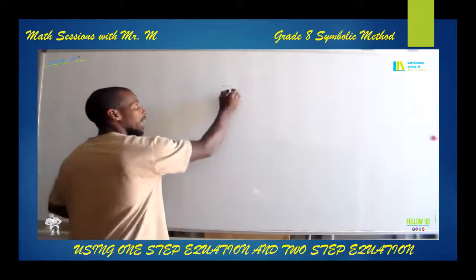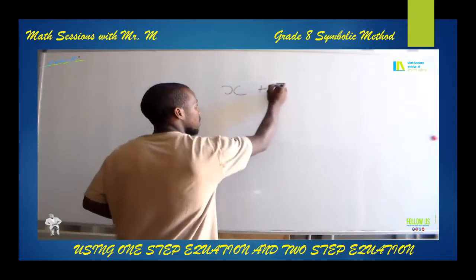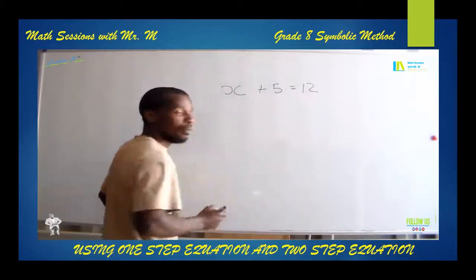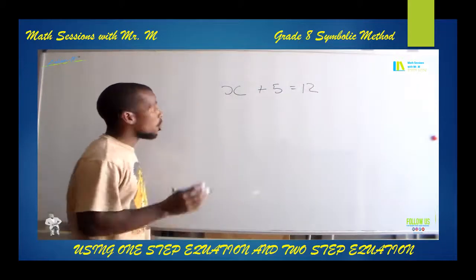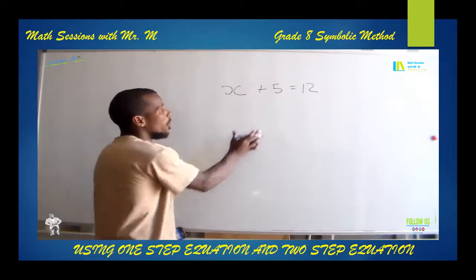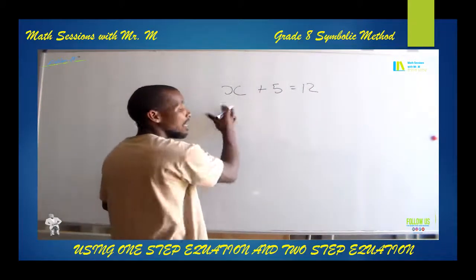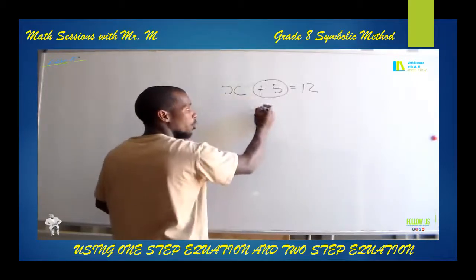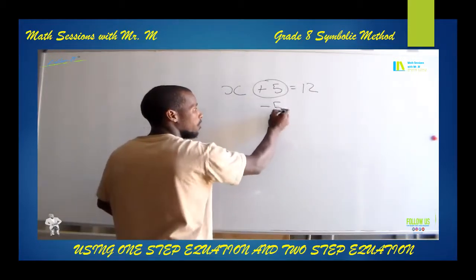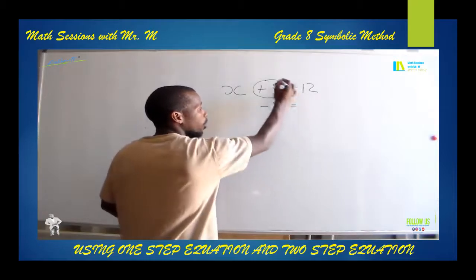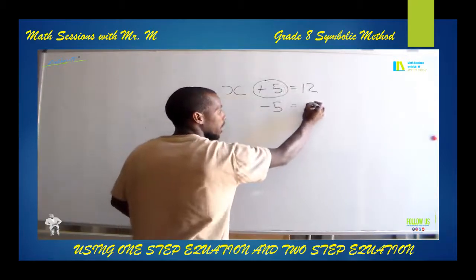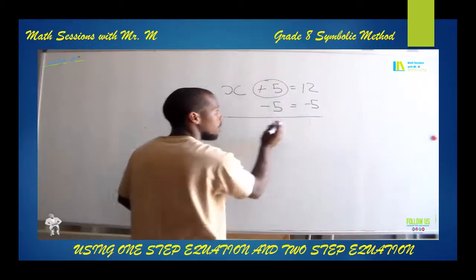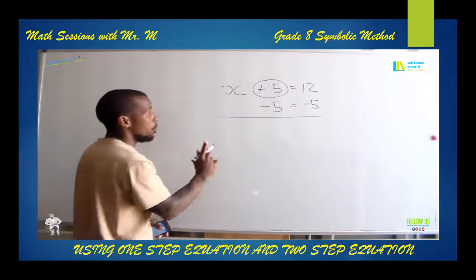Let's say you are given X plus 5 equals to 12. So you are solving X. You have to take away anything that is attached to X. Since you have a positive 5 here, you are going to introduce a negative 5. Equals to, also, a negative 5. And then you draw a line. This is a one-step equation.